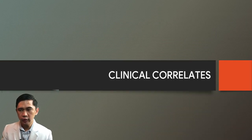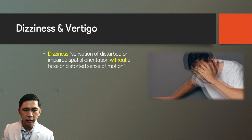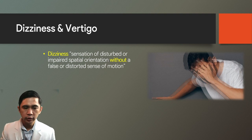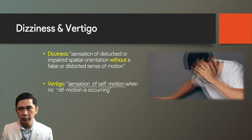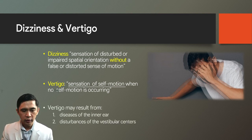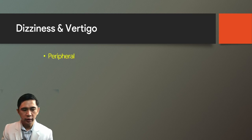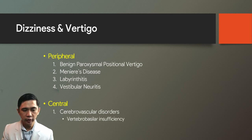Dizziness is a sensation of disturbed or impaired spatial orientation without a false or distorted sense of motion. Vertigo, in contrast, is a false sense of motion—described by patients as spinning—and may result from diseases of the ear, disturbances of vestibular centers, or diseases of the central nervous system. Peripheral causes include BPPV, Meniere's disease, labyrinthitis, and vestibular neuritis. Central causes include cerebrovascular disorders such as vertebrobasilar insufficiency and migrainous vertigo.